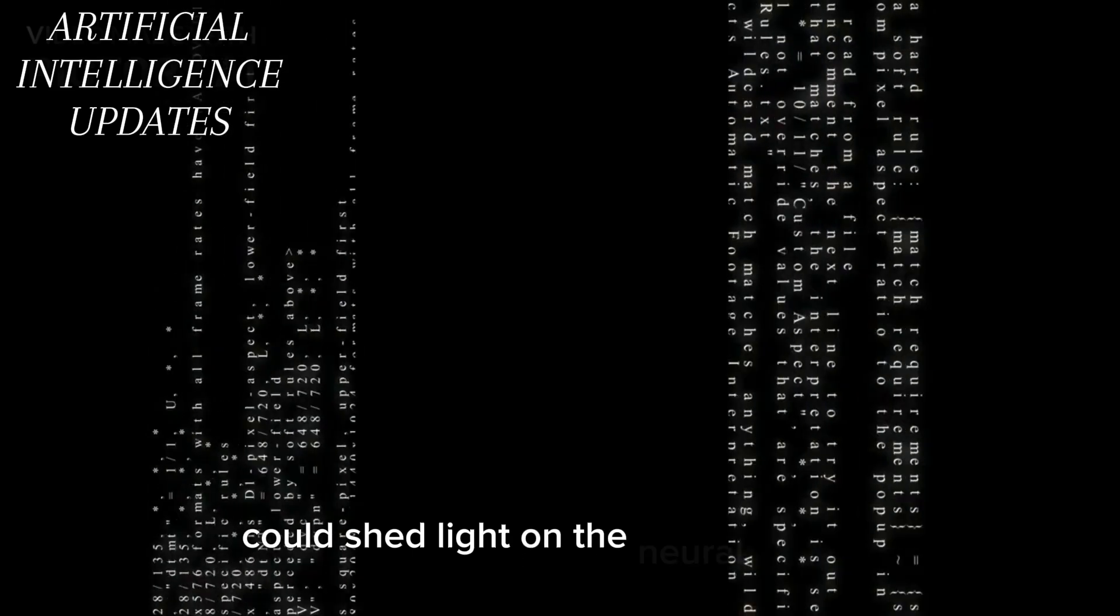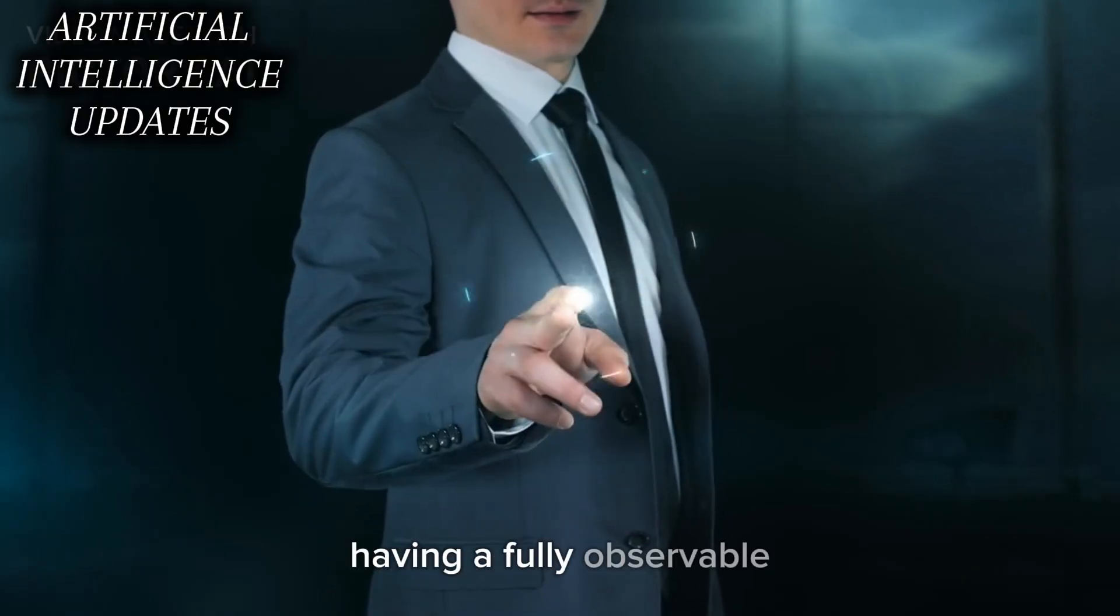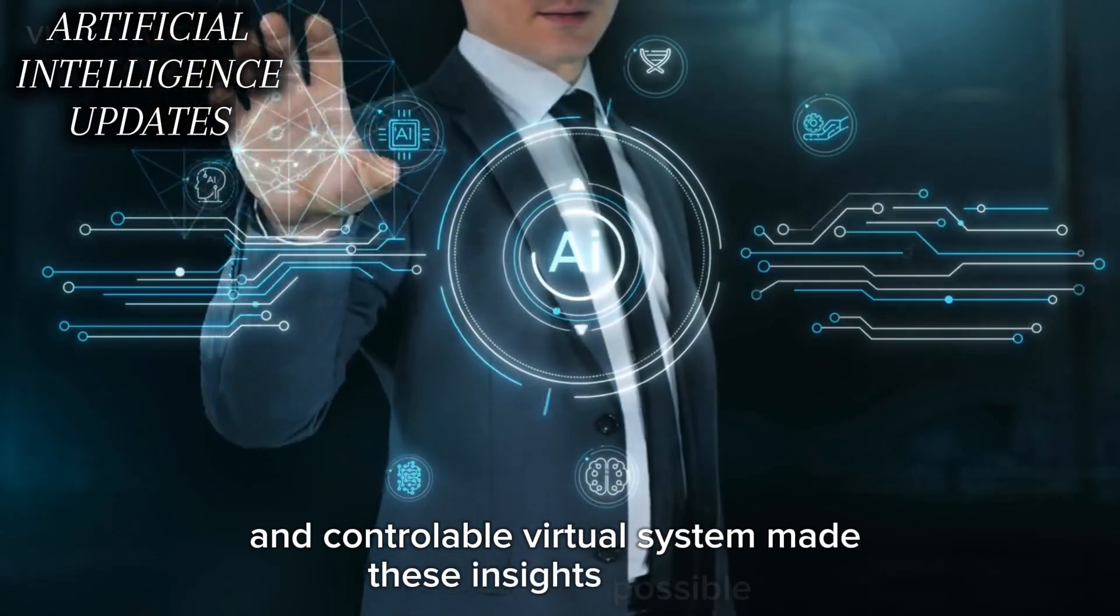This kind of variability signature is essentially invisible from just looking at the overall movements, but a window into it could shed light on the neural coding strategies used by the brain. Having a fully observable and controllable virtual system made these insights possible.